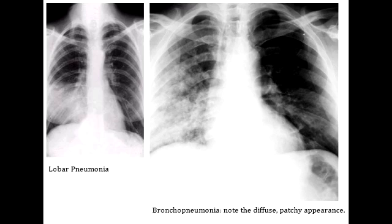Briefly describe the differences between lobar and bronchopneumonia. Lobar pneumonia is caused by pneumococci, or Strep pneumo, in 90% of cases, and in a few cases by Klebsiella, whereas bronchopneumonia is caused by Strep, Staph, H. influenzae, and Klebsiella.